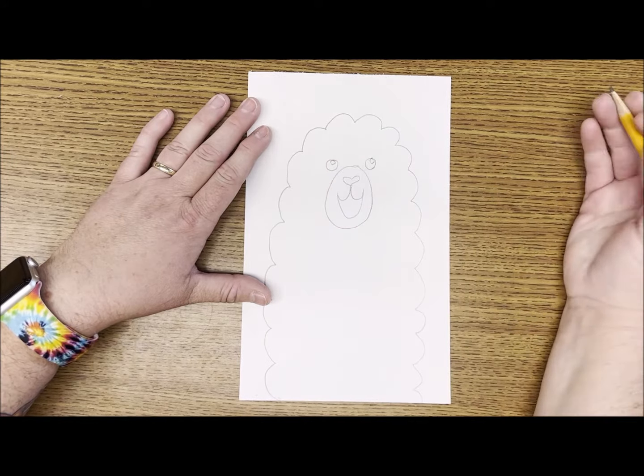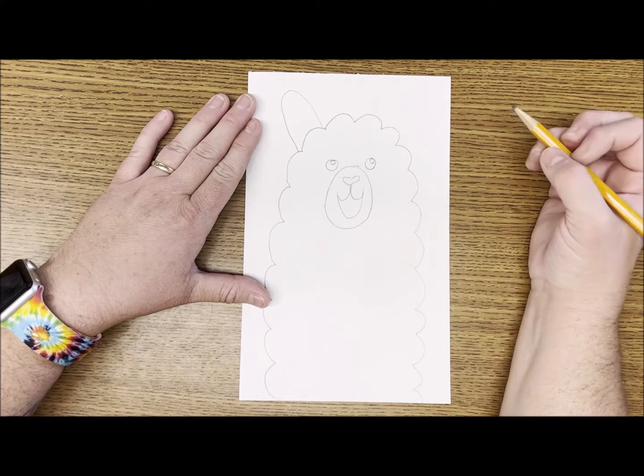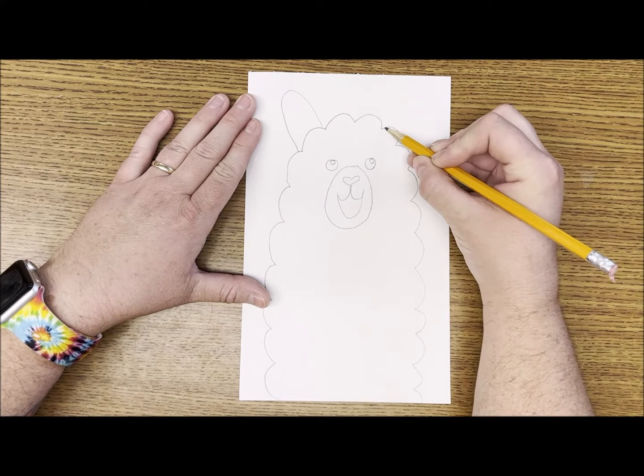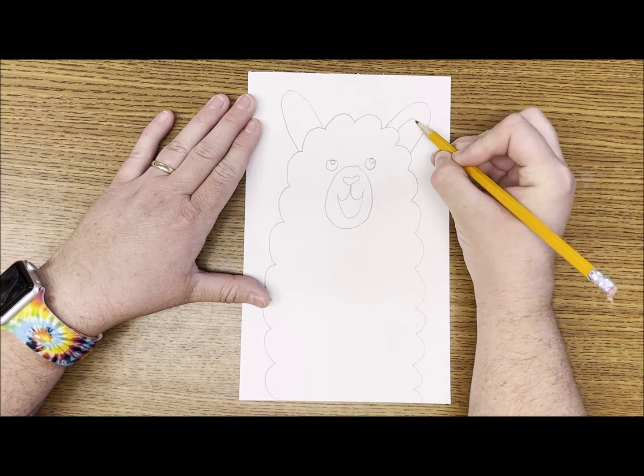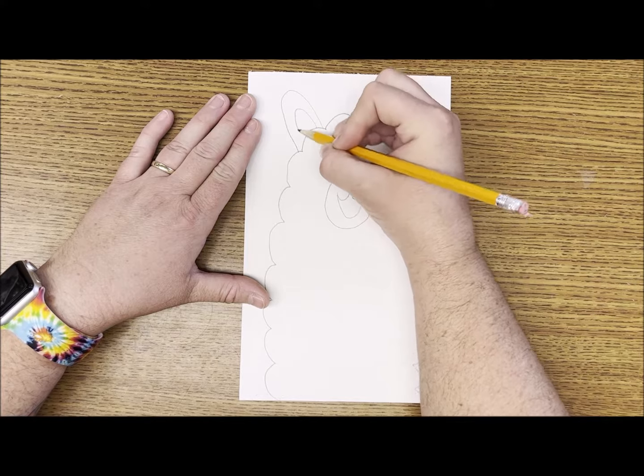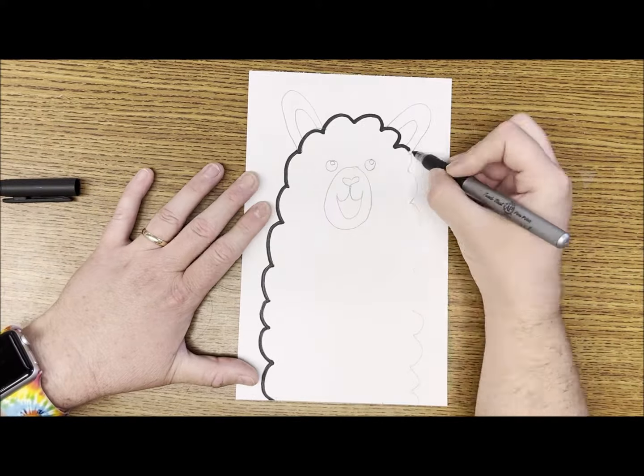Next I'll draw the ears with big curved lines, trying to match each on both sides. Finally, I'll add a little line inside each of the ears. I'm ready to outline with black marker.